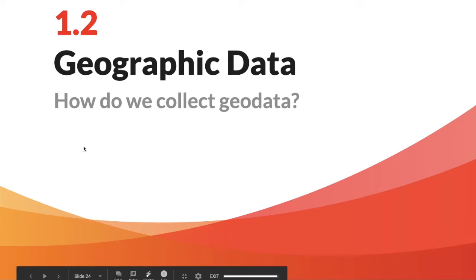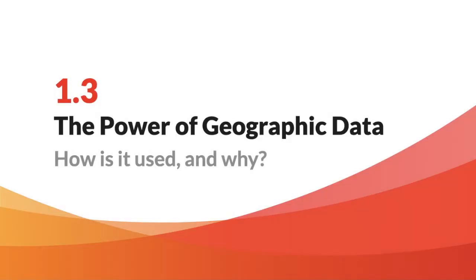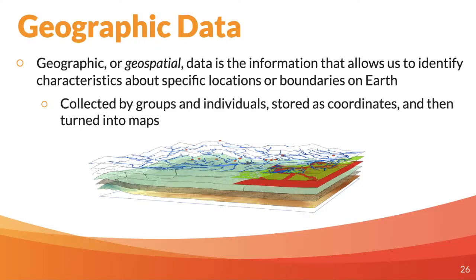Section 1.2 is titled 'Geographic Data' and asks how do we collect geodata? Section 1.3 is titled 'The Power of Geographic Data' and asks how is it used and why? So we want to know how do we collect it and how do we use it. Geographic data, or geodata, or geospatial data, is the information that allows us to identify characteristics about specific locations or boundaries on Earth. We can put these specific characteristics to specific locations even if we haven't been there before.